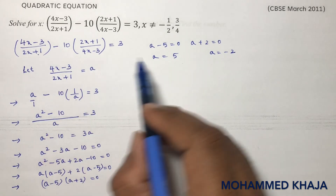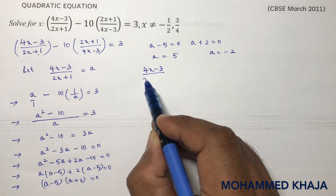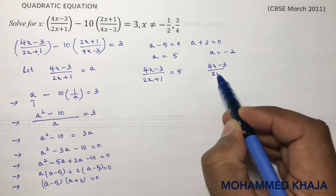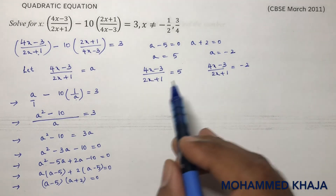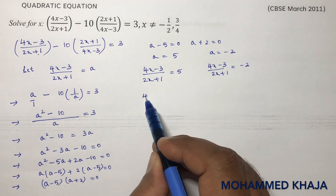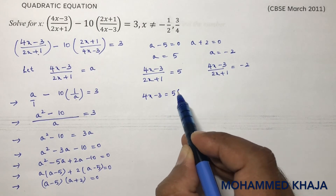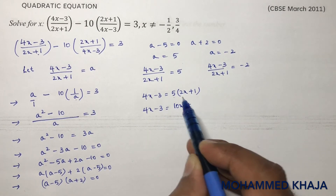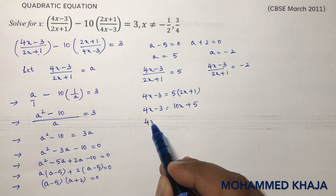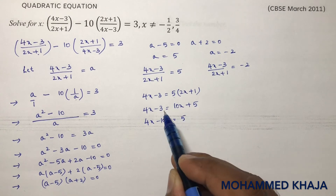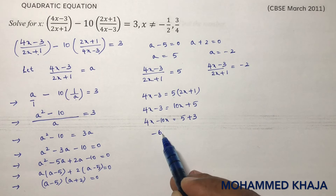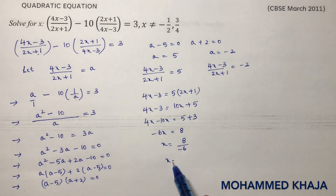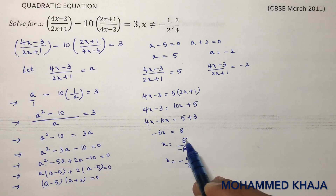Now we need to solve for x by replacing a. For a equals 5: (4x minus 3) by (2x plus 1) equals 5, so 4x minus 3 equals 10x plus 5. Rearranging: 4x minus 10x equals 5 plus 3, giving minus 6x equals 8, so x equals minus 4 by 3. For a equals minus 2: (4x minus 3) by (2x plus 1) equals minus 2.